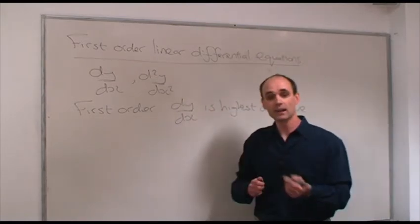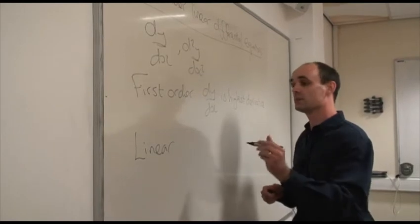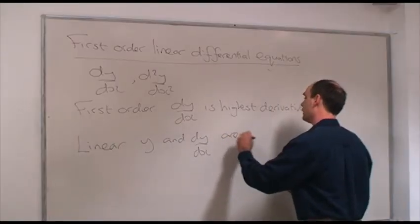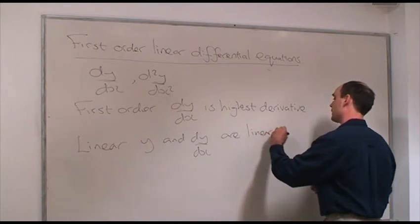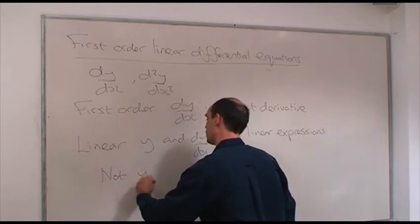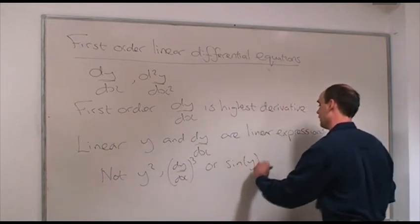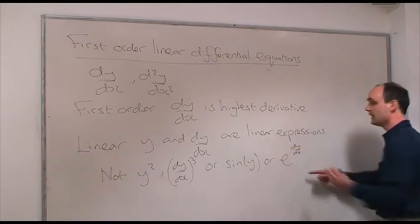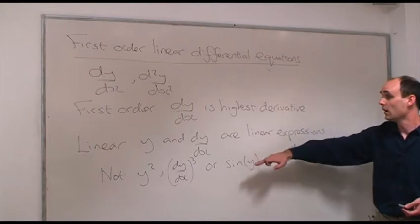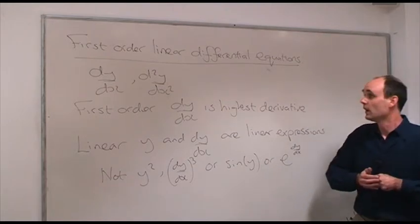What do we mean by linear? By linear, we mean that terms like y and dy/dx are occurring as linear expressions. So we mean not anything like y squared, or (dy/dx) cubed, or sine of y, or e to the power of dy/dx, or anything else that would be non-linear. So dy/dx is the highest derivative — that makes it first-order — and nothing like y squared or (dy/dx) cubed, because that would make it a non-linear equation.